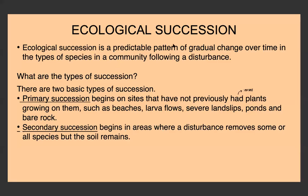This video explains ecological succession. It's the second video in the population studies. Ecological succession is a predictable pattern of gradual change over time in the types of species in a community following a disturbance. Ecological succession is how the ecosystem builds up and grows and how species continue to enter an area and make the area more complex.